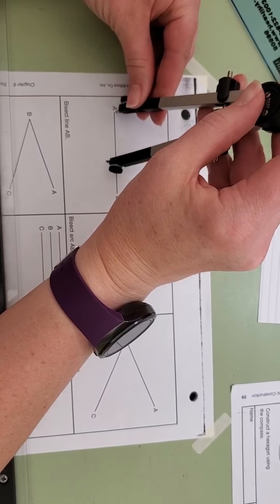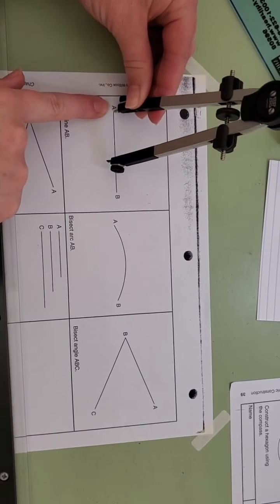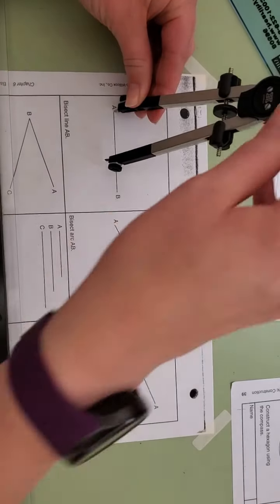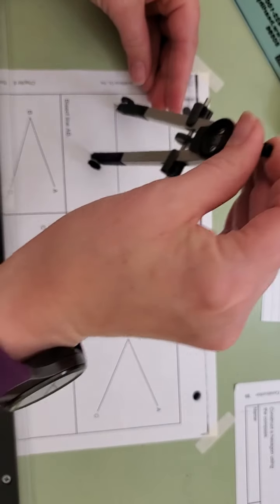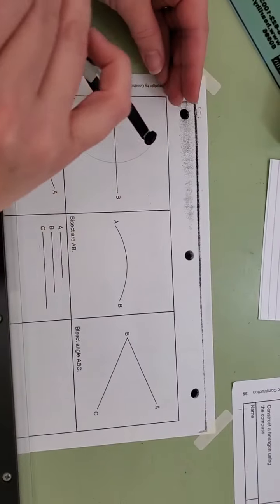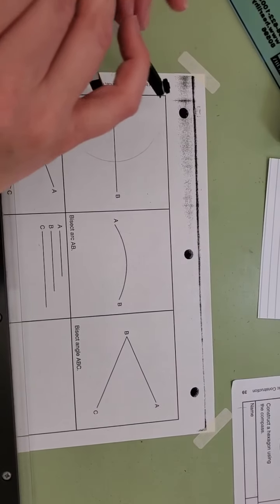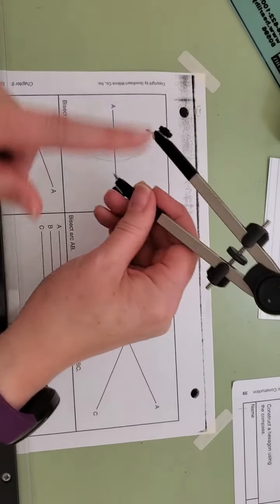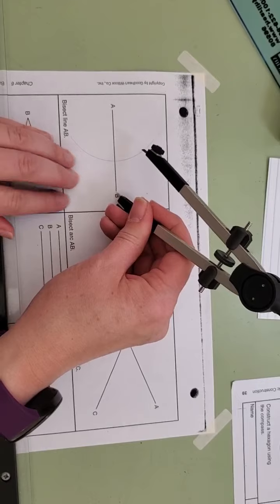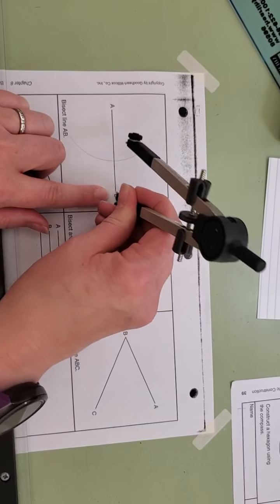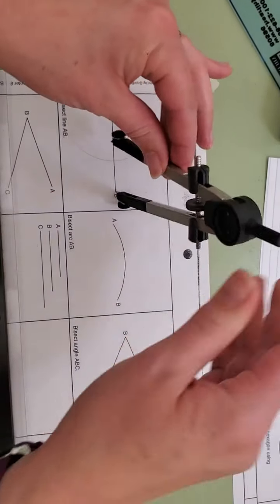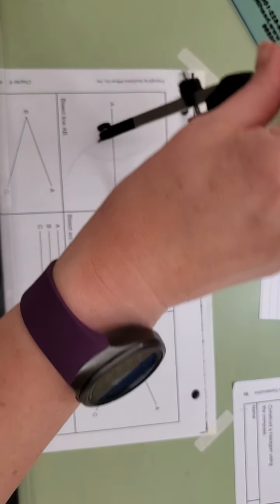Then I'm going to put the tip of my compass at the very end of the line. Now I'm going to create an arc with my compass lead, pick up my compass and without changing the measurement I'm going to put it in the opposite end at point B and create another arc.